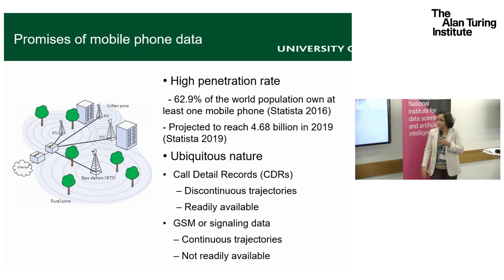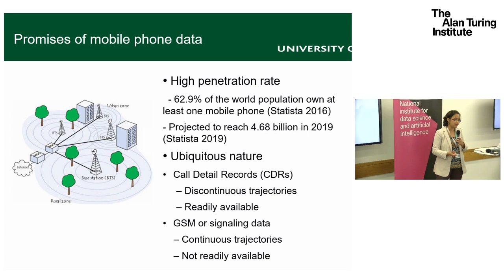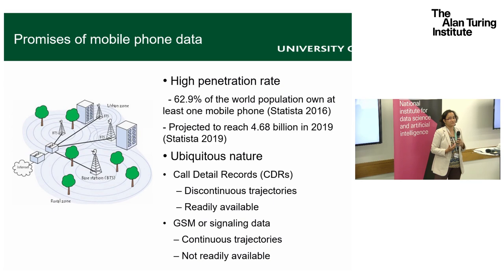We typically use two types of mobile phone data: call detail record (CDR) data, which was mentioned before, and GSM or signaling data. With CDR data, we only get the location of towers handling a particular call or text message when the user is actively using the phone. It is very discontinuous, but it is stored by mobile phone operators for billing purposes — it is already a by-product that requires no additional effort from the data provider.